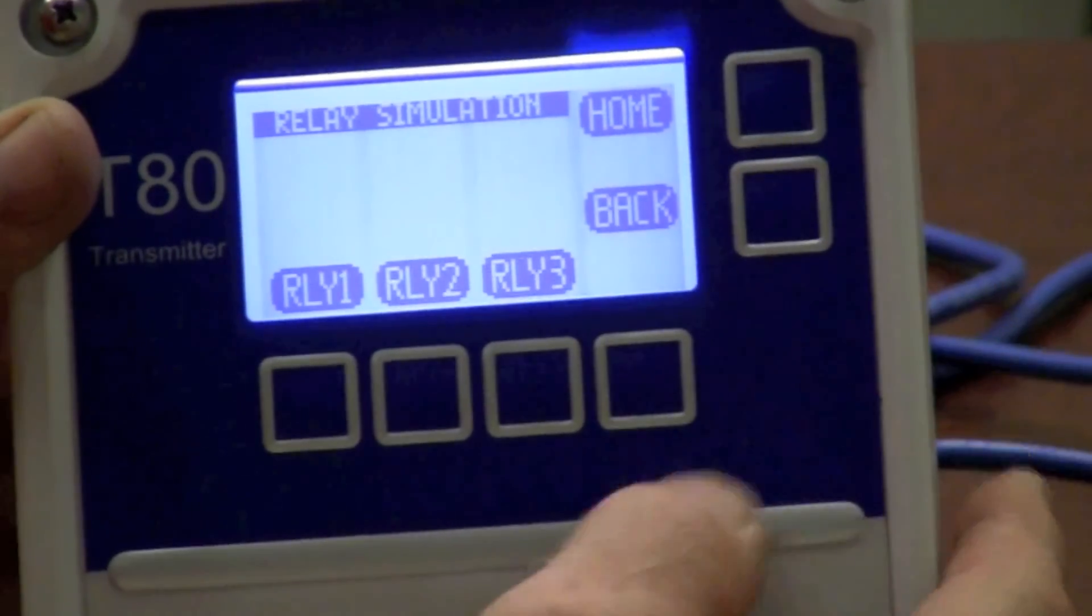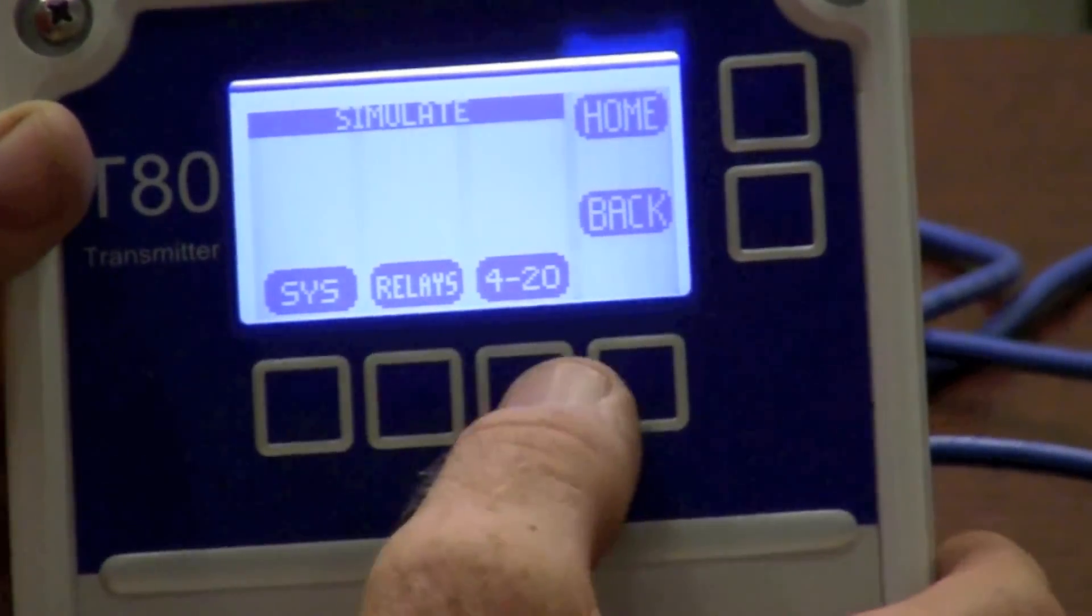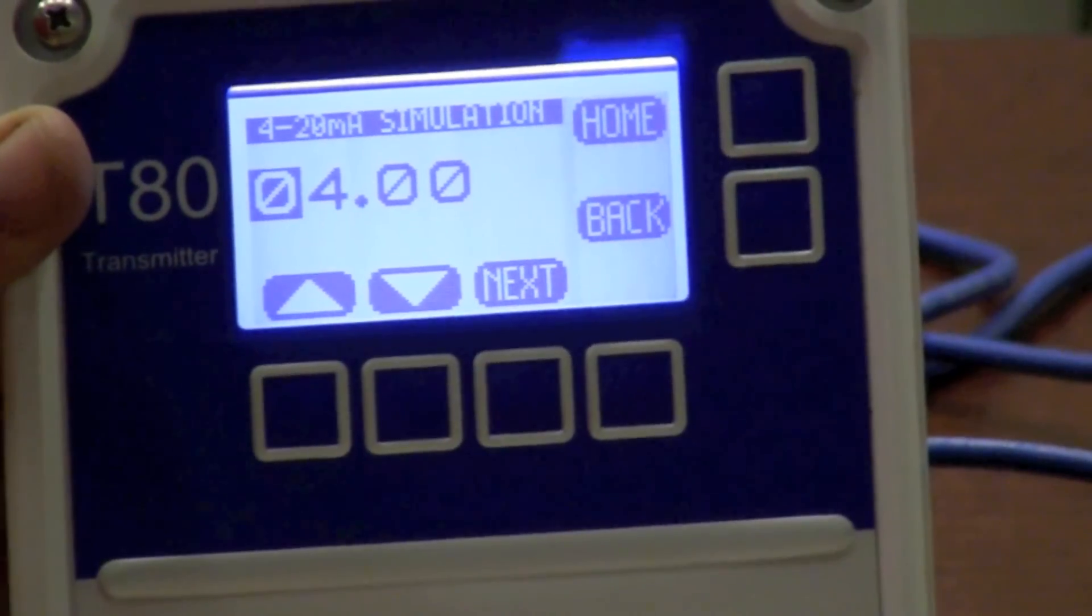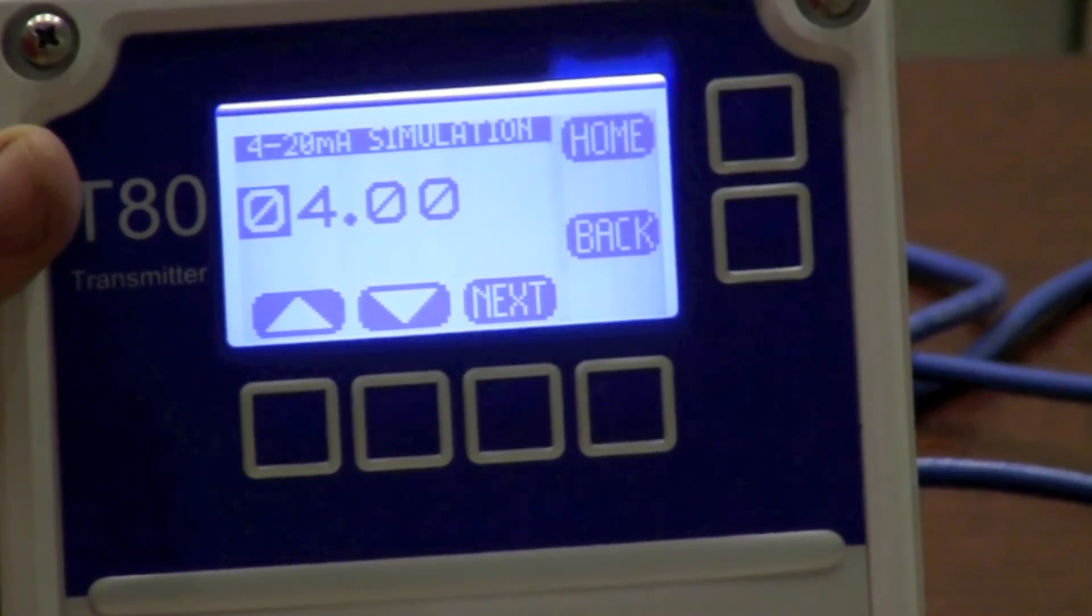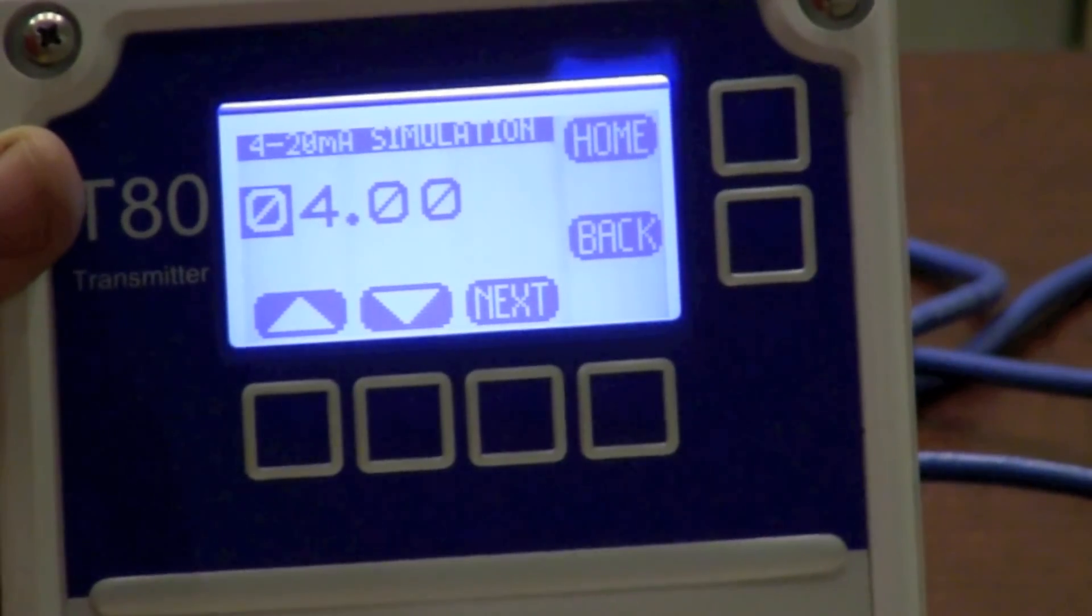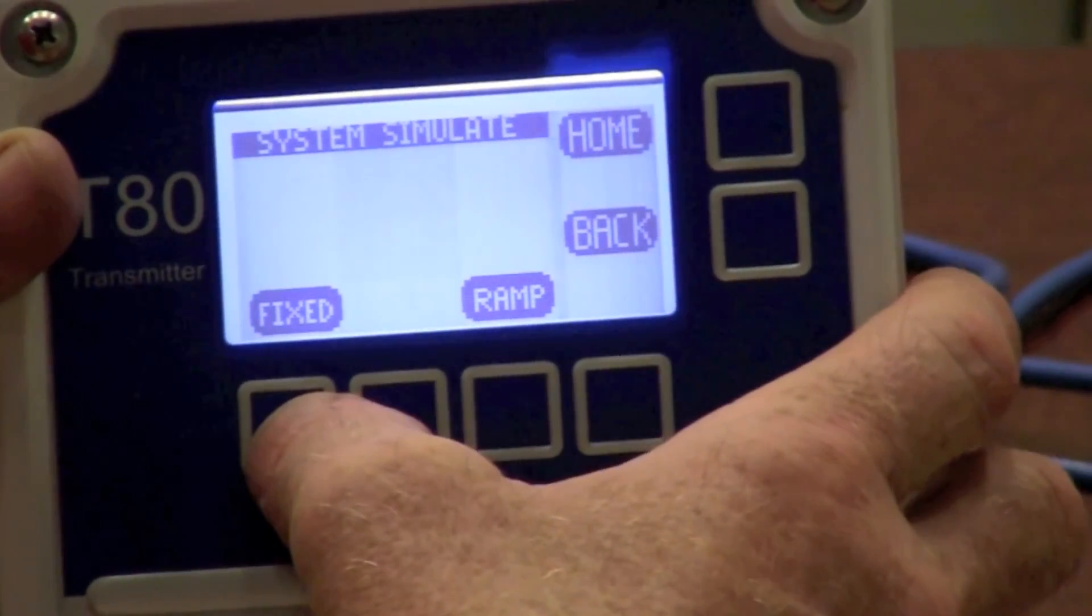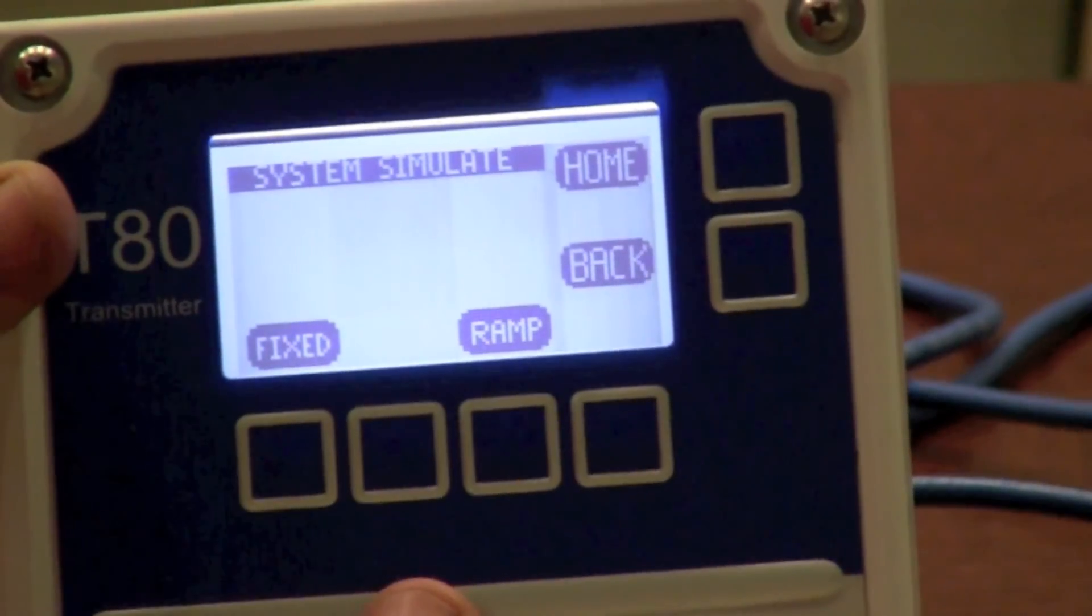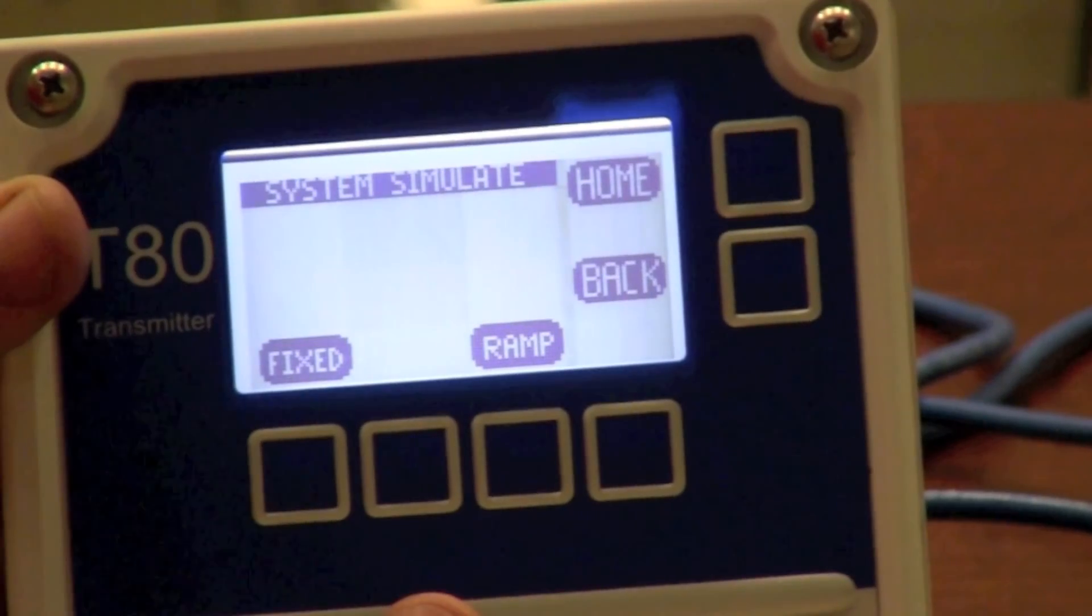Pushing the back key, I can come over and simulate my 4 to 20. Ensuring that my PLC is scaled the same as my pH transmitter in the field. A very common error. Also, I have system simulate. And this allows me to ramp my analog output if I wish.